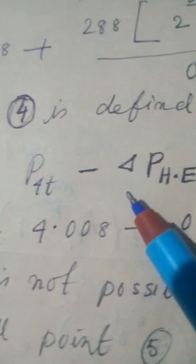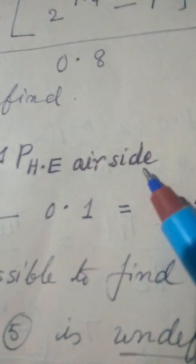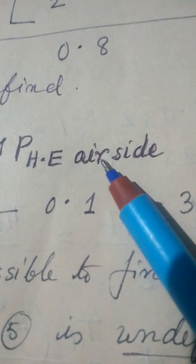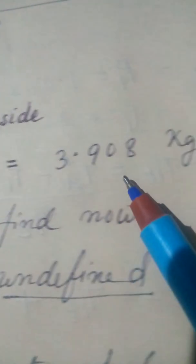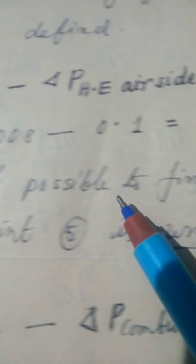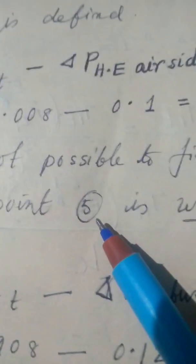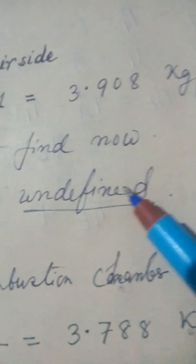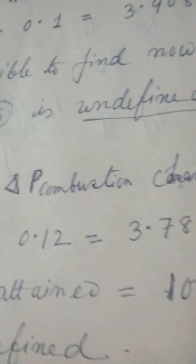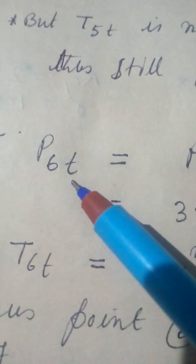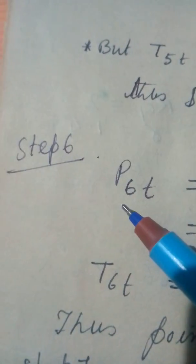Point 5. Same, pressure drop in heat exchanger from air side. There are two sides, one is air side and there is gas side. But T5T is not possible to find now, nothing is given. So still point 5 is undefined. We will do it in subsequent steps.